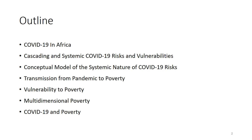Then we will be looking at the cascading and systemic COVID-19 risk and vulnerabilities — a conceptual model which has been recently designed to look at the systemic nature of COVID-19 risk. We'll examine the transmission from pandemic to poverty, vulnerability to poverty, multi-dimensional poverty and COVID-19. This module is more about vulnerability to poverty; in the previous module we talked a lot about risk and vulnerability, but today we will be focusing more on vulnerability to poverty and linking that with COVID-19.